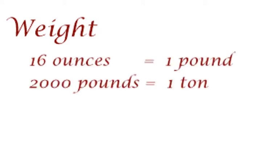In weight we have that 16 ounces equals 1 pound, and then we have that 2,000 pounds equals out to 1 ton.